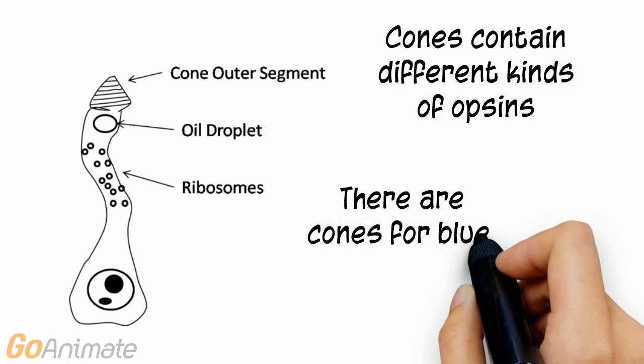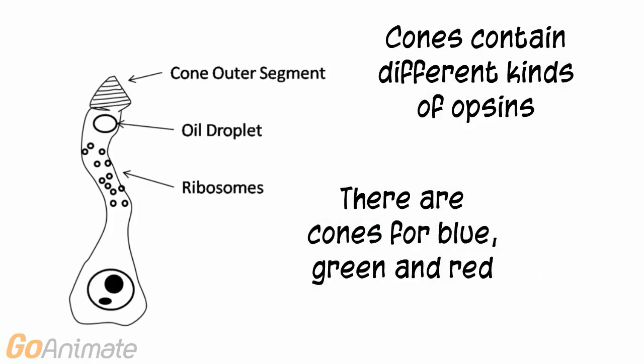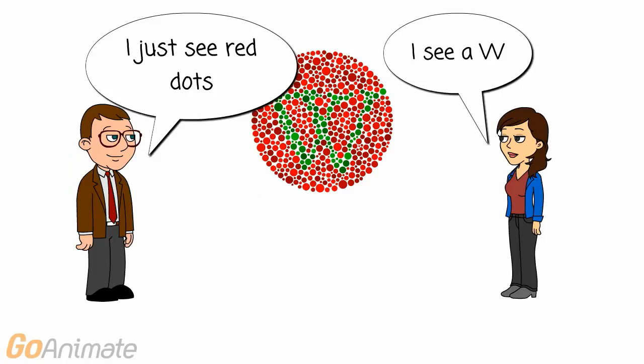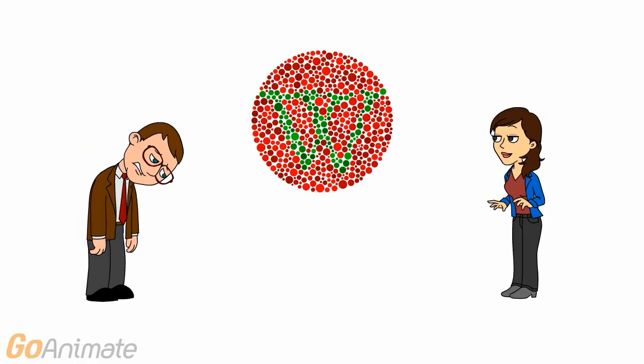Cones contain different kinds of opsins. There are cones for the three primary colors: blue, green, and red. Colorblindness results from absent or non-functional cones. We hope you have learned something about the eye — see you next time.